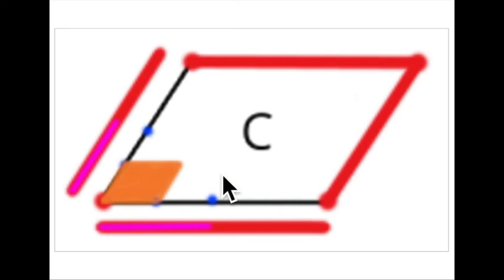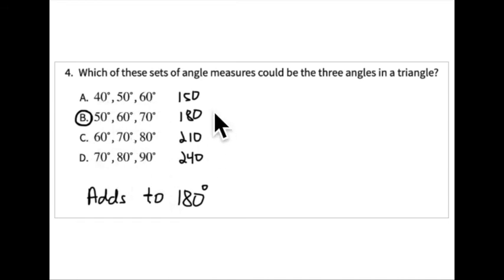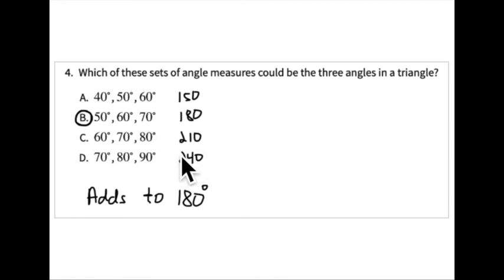Problem four asks which set of angles could be the three angles of a triangle. The angles of a triangle must sum to 180 degrees. Simply add all the values in each set — the one that adds to 180 degrees is the answer, which is option B. The other sets do not add to 180 degrees and cannot form a triangle.